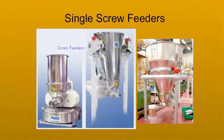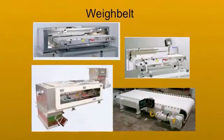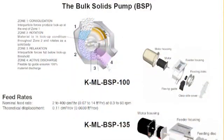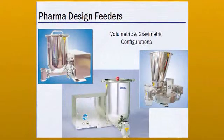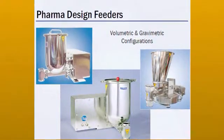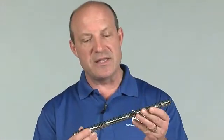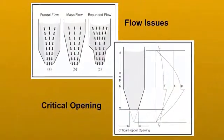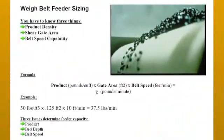Process feeders examined include screw feeders, single and twin, weigh belts, vibratory feeders, bulk solids pumps, liquid pumps, and smart flow meters, along with special feeder types that can be used in pharmaceutical applications. We will study screw feeders and their various screw, tube, and hopper configurations and the methods to calculate the volumetric throughput for both screws and belts.